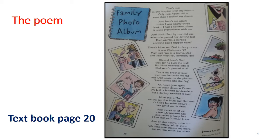Seventh stanza: 'Oh here is Jake again on the beach down at Dover. We built a brilliant sandcastle but a donkey knocked it over.' You can see a boy crying — that is Jake again. He is crying because they built a sandcastle but someone knocked it down.